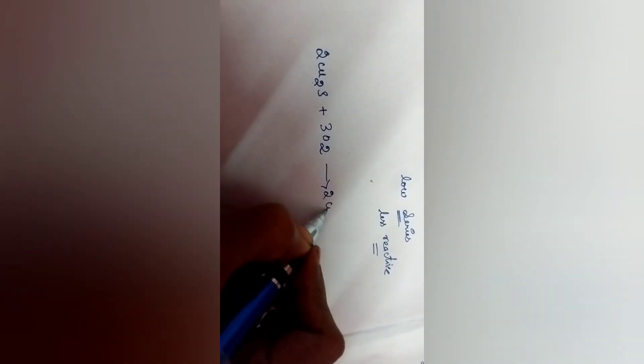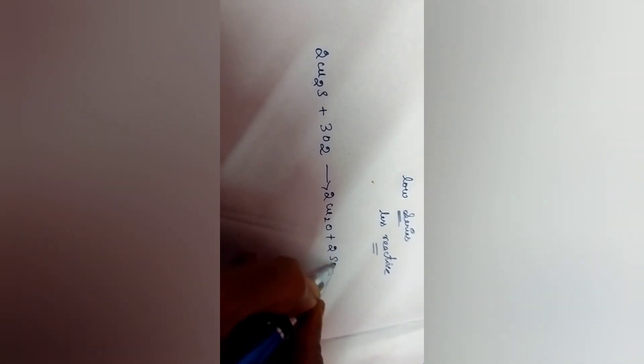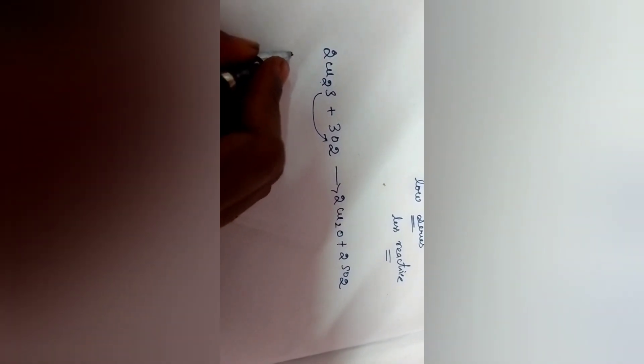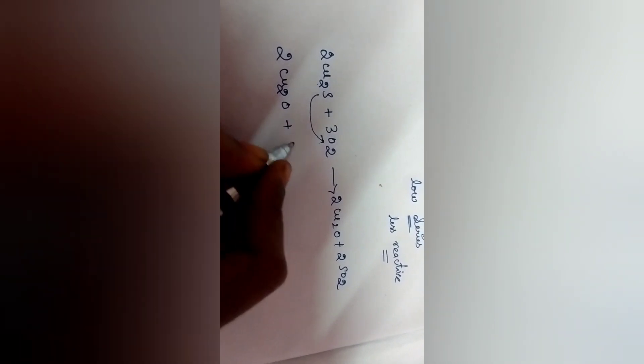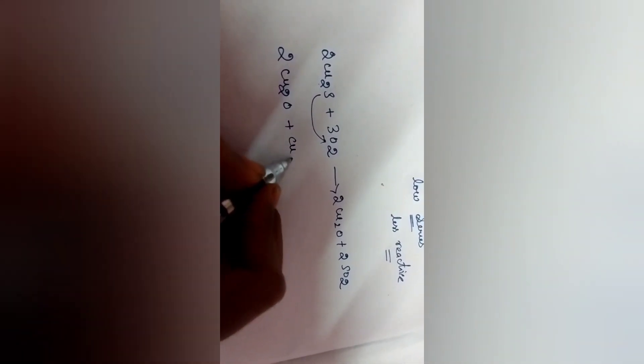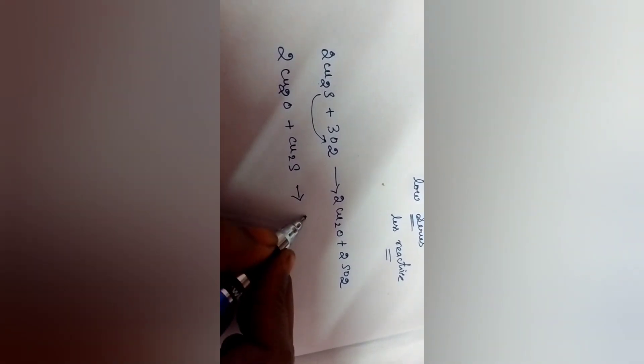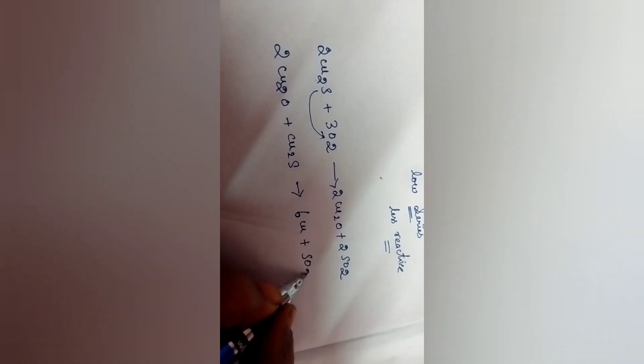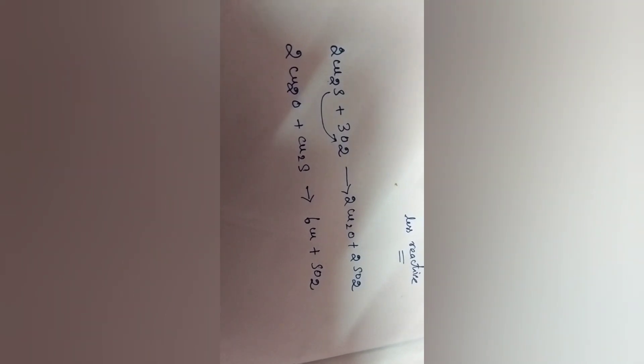Another example for a less reactive metal: I am taking copper sulfide. In the presence of air, I am heating the copper sulfide. What happens is that copper sulfide is converted into copper oxide and sulfur dioxide is formed. Then I heat this copper oxide again with copper sulfide - copper is liberated and sulfur dioxide is formed. From copper sulfide we get pure copper.